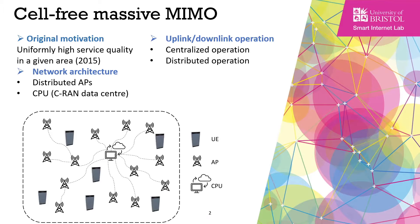Cell-free massive MIMO was initially proposed in 2015 with its original motivation for providing uniformly high performance for all users in a given area. Its basic architecture is a large number of APs distributed in a large area connected to the CPU, or central data center.